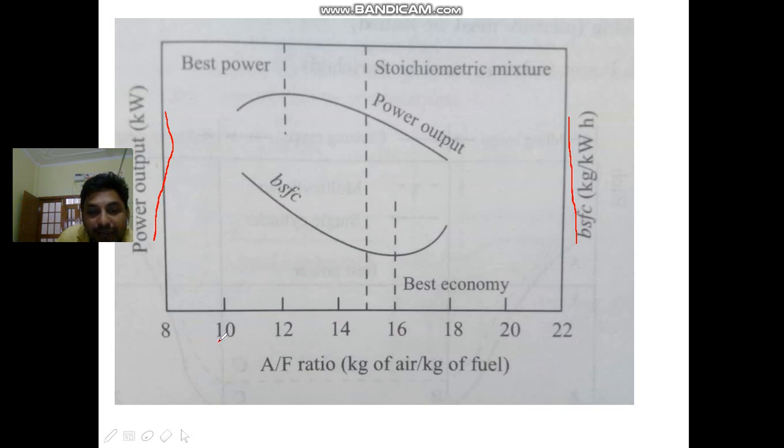You can see, as you are increasing air fuel ratio, your brake specific fuel consumption is decreasing. After this point, this is the threshold point where around 16 is the ratio. If you increase the ratio, then the brake specific fuel consumption will increase.